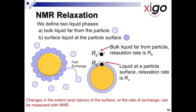In NMR relaxation, let's look at what's actually going on. We define two liquid phases: bulk liquid far from the particle surface, and surface liquid, which is literally bound to the surface of the particle. When a particle is wetted, liquid molecules attach themselves to the surface, and this changes both the rotational and translational motion of that bound liquid, making it different from the liquid far away from the particle surface.